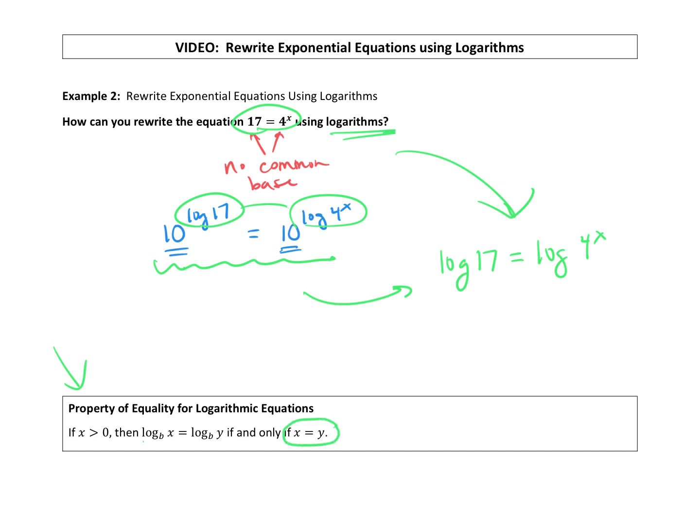So if you notice in this property, we have log with the same base, so log base b, log base b of x on this side of y on that side, that is true if x is equal to y. And that's essentially what we ended up writing up there.